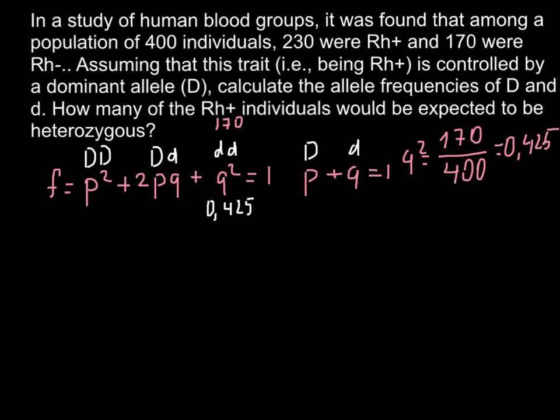The answer here would be 0.425. This is the number for q squared. The frequency is 0.425. As long as we know q squared, we can easily find q. q squared would be 0.425, then q would be the square root of this number.